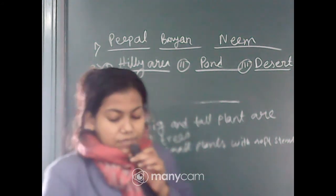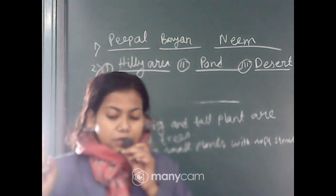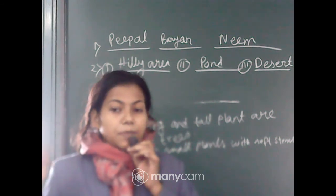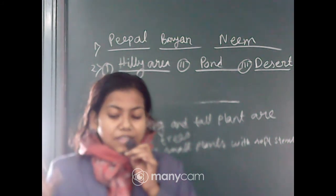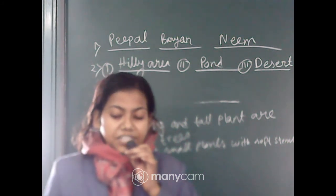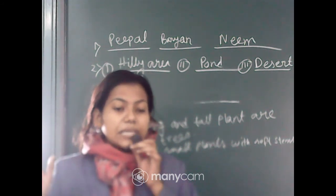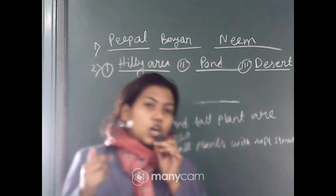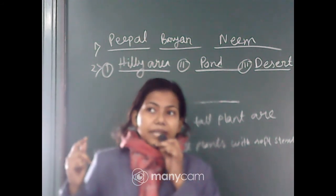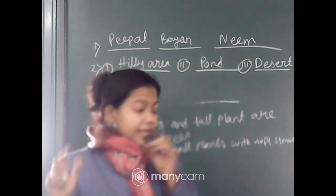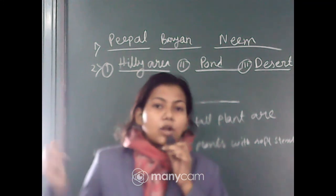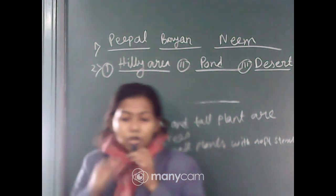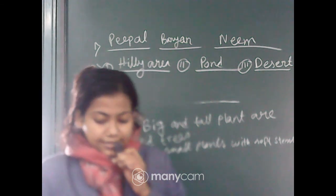So we have learned that there are different types of plants. Trees are big and tall plants with strong brown stems — like banyan, peepal, neem, and mango. Shrubs and bushes also have brown stems but are smaller than trees — like hibiscus and rose. Very small plants with soft stems are called herbs — like tulsi and mint. Plants with weak stems that need support to climb are called climbers — like grapes. And creepers are plants which grow along the ground — like watermelon.